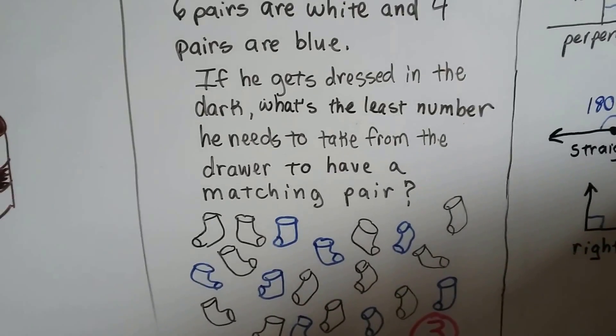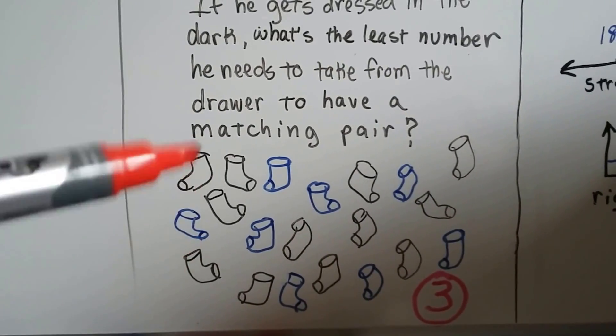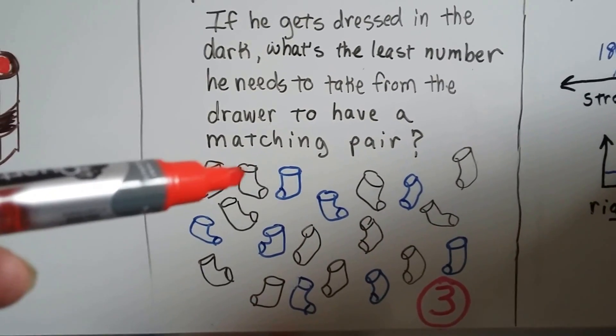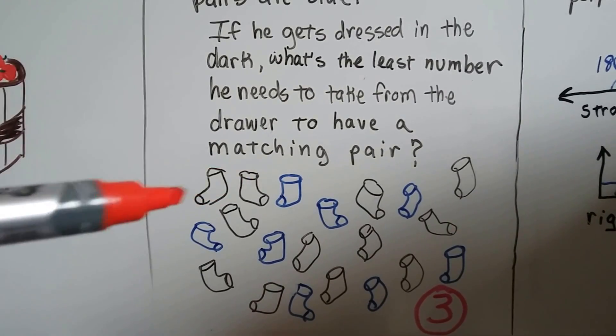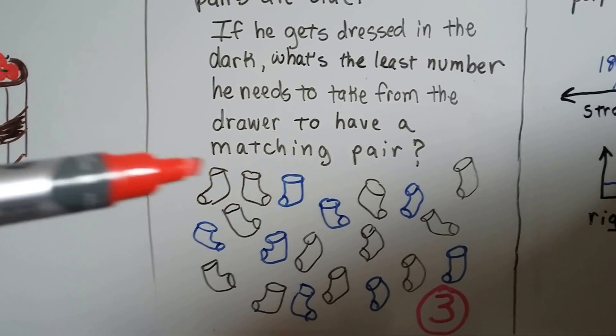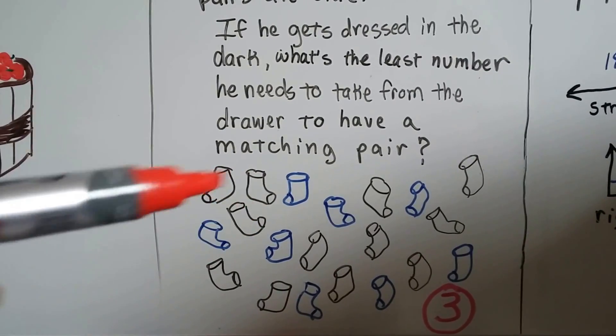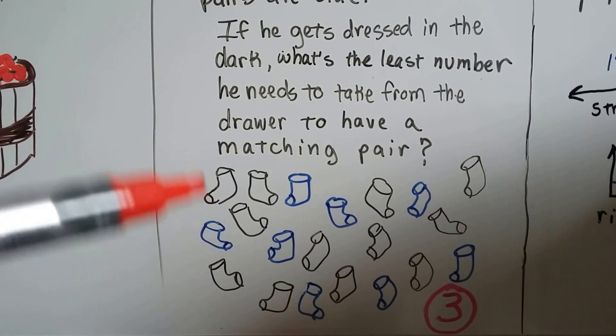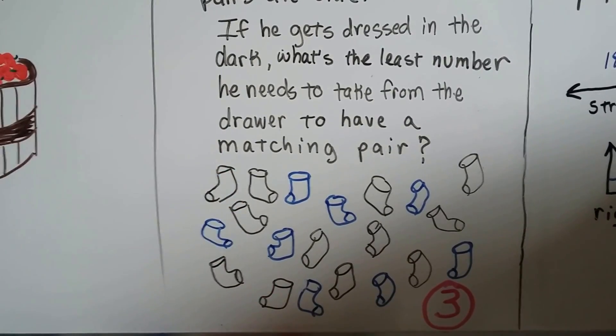The answer is three. If he picks a white one the first time and a white one the second time, then he does have a pair. But what if he picks a white one and a blue one? Whatever he picks next, the third sock is going to match the first or second one. So to absolutely make sure that he has a matching pair, he has to pull three socks from the drawer. That's probability.